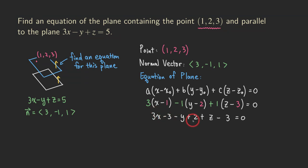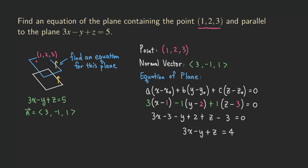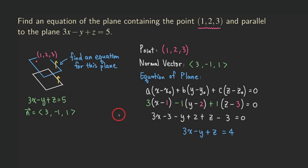Moving all the constant terms to the other side, we get 3x minus y plus z equals negative 3 plus 2 minus 3 on the left side becomes negative 4 on the left, so moving it over gives positive 4. The final equation is 3x minus y plus z equals 4. As you can see, the coefficients for x, y, z are the same as the original plane, but the constant is different — that's exactly what it means for two planes to be parallel.